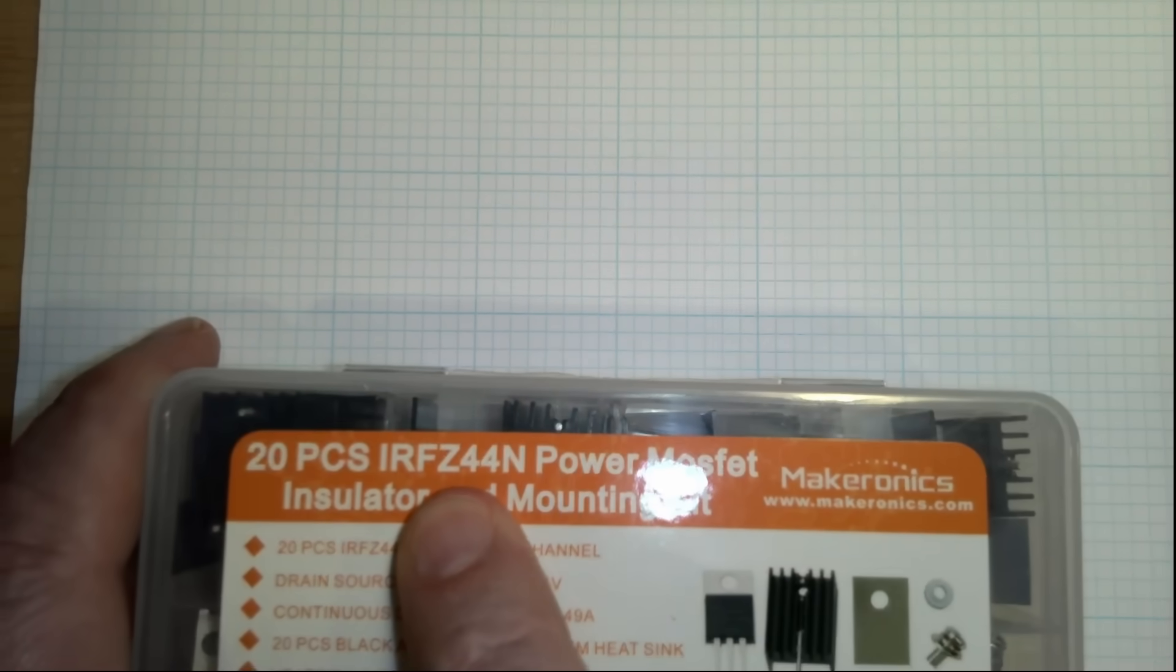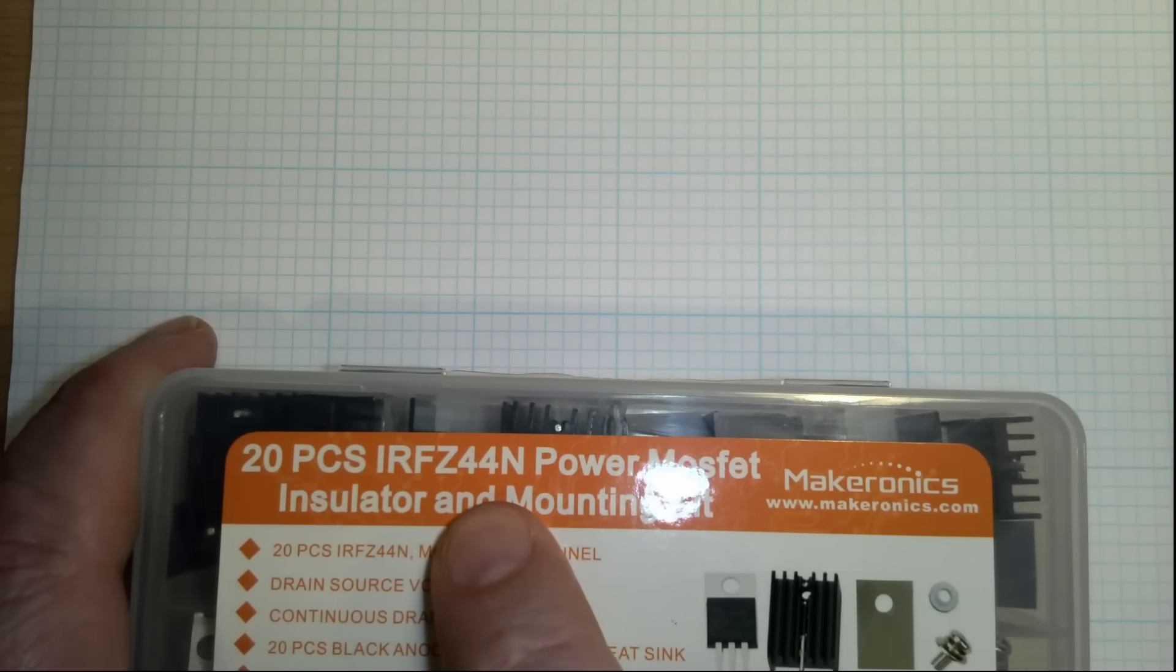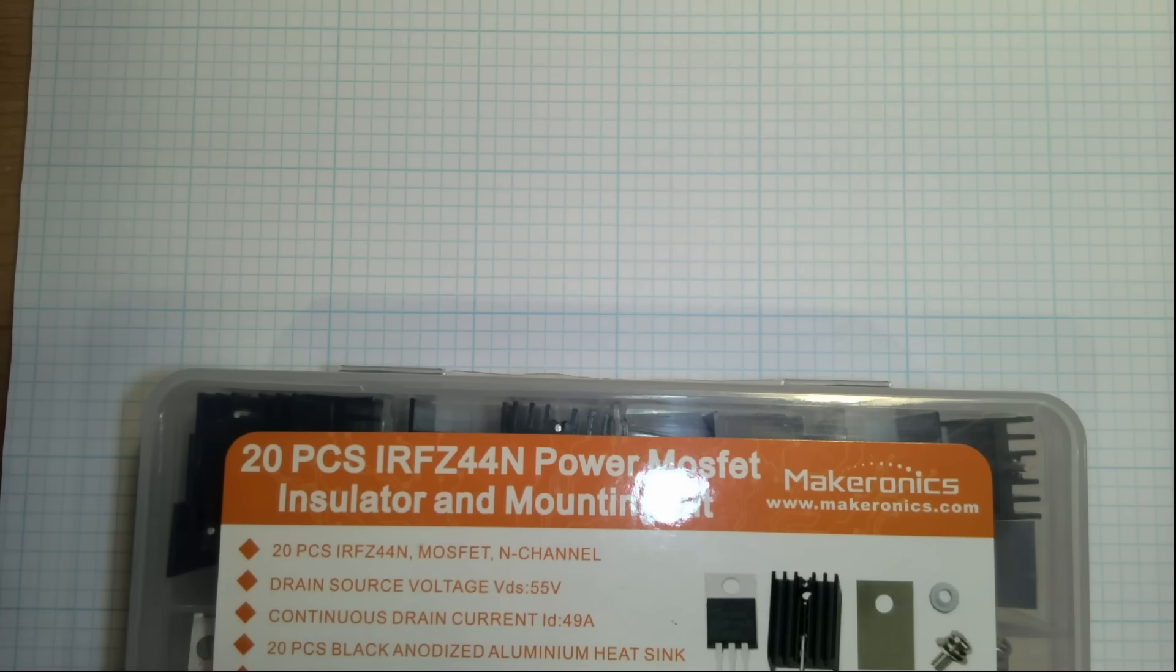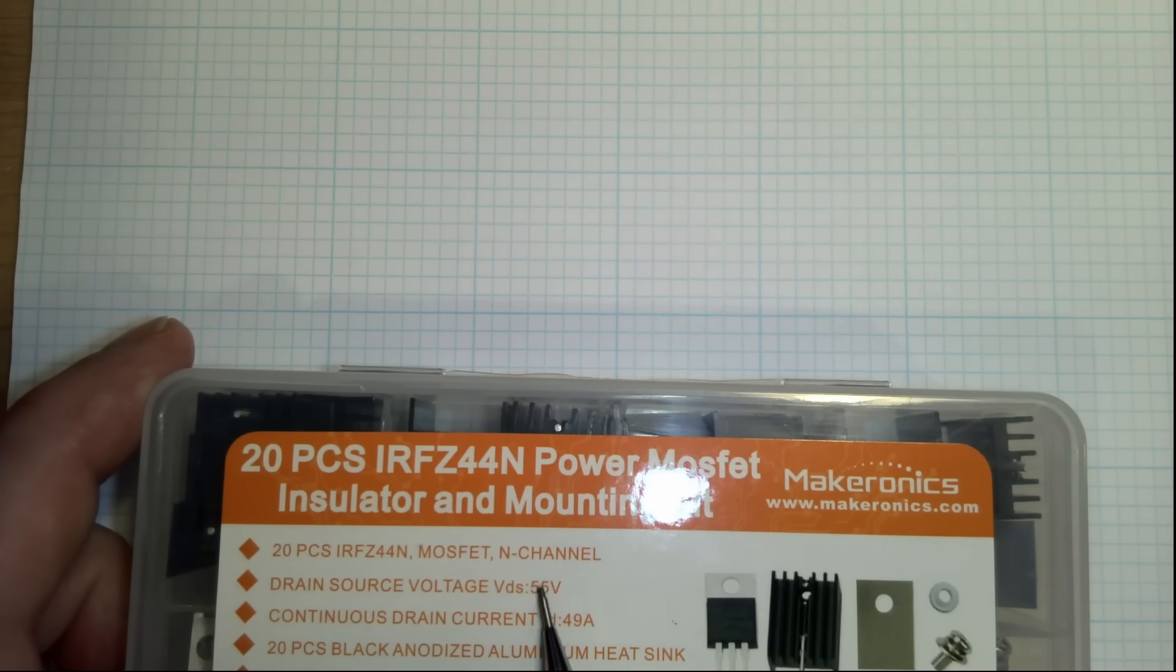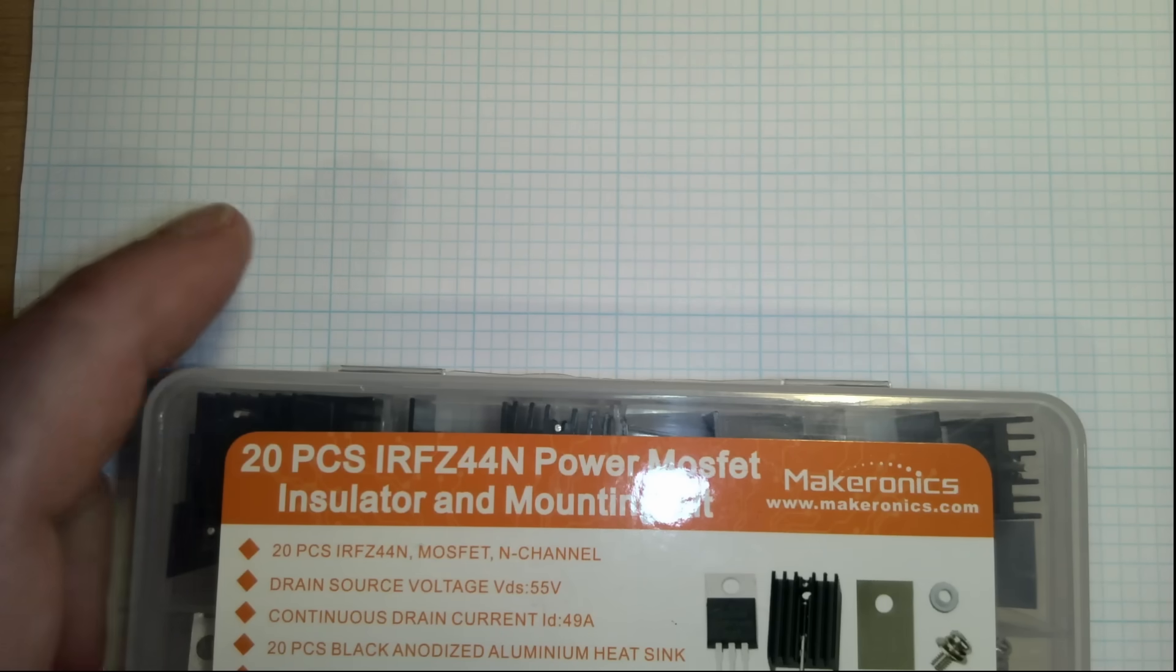On this one, I'm using this IRFZ44N. This is a pretty common part number. And you can see here, it'll sink up to 49 amps and can run at 55 volts. So this is fantastic for an automotive application. We're never going to exceed 55 volts and we're probably not going to exceed 49 amps. If you're going over 49 amps for something, that's when you really want to look at using a relay.